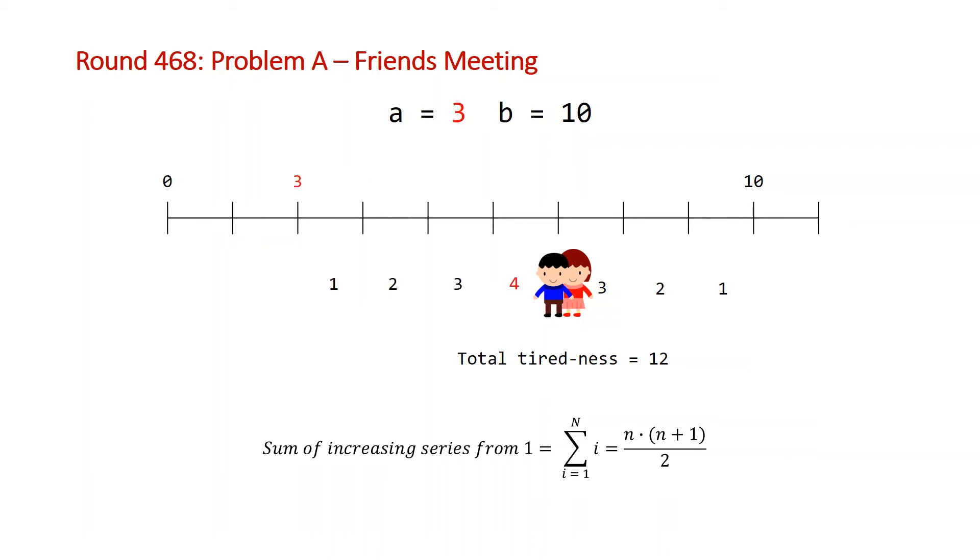So the other example that we need to consider is that for our previous example, when A is equal to 4 and B is equal to 10, the difference between these two is even, and that means that this is going to be symmetric. But if we have an odd difference where A is equal to 3 and B is equal to 10, that means that one of the two individuals after having moved the same amount as the other is going to have to make that final move. So we'll have to do a small modification when the difference between A and B is odd.